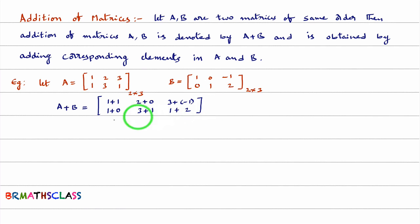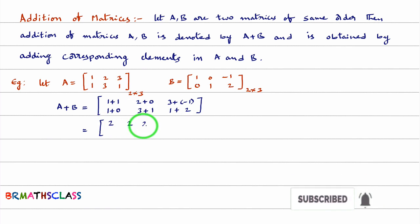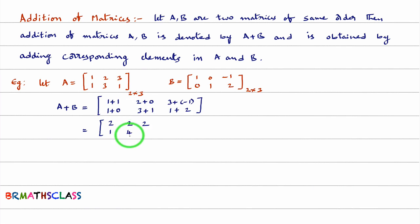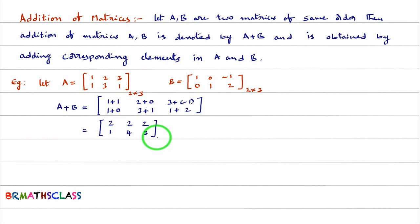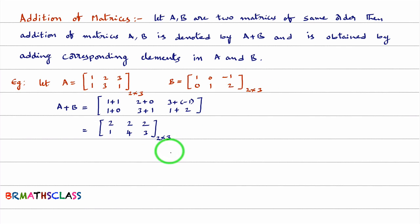Now, simplifying: 1 plus 1 is 2, 2 plus 0 is 2, 3 minus 1 is 2, 1 plus 0 is 1, 3 plus 1 is 4, and 1 plus 2 is 3. So you can observe that after adding two matrices, you get a matrix of the same order. A is a matrix of order 2 by 3, B is also of the same order, and A plus B is also a matrix of order 2 by 3.